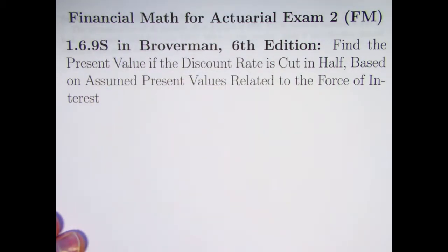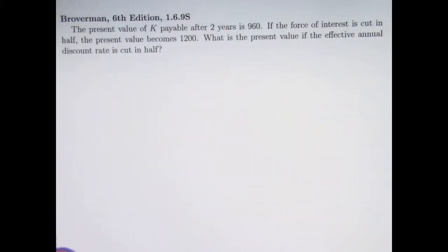It's kind of got a long description here. Find the present value in a certain situation if the discount rate is cut in half based on assumed or known present values that are related to the force of interest. So lots of things going on here. The problem statement itself is not too long.